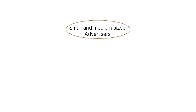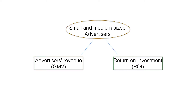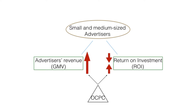In Taobao advertising platform, most advertisers are small and medium-sized ones who are more concerned about an increase in revenue than promoting their brand. So we choose to optimize their revenue while keeping or improving the return on investment as a primary application of our OCPC algorithm.